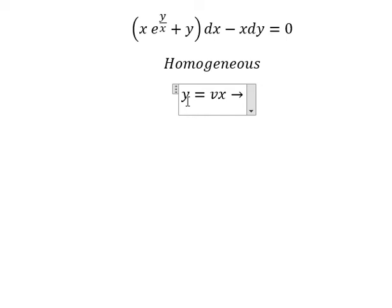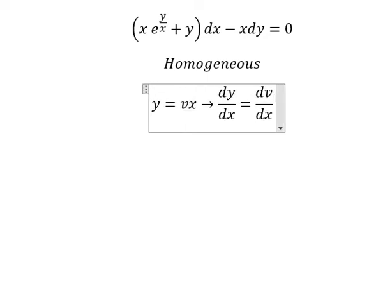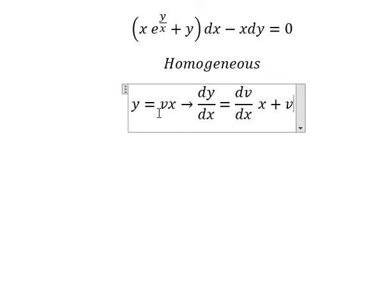If we take the first derivative of both sides, we have dy over dx equals dv over dx multiplied by x plus v, because we apply the product rule.